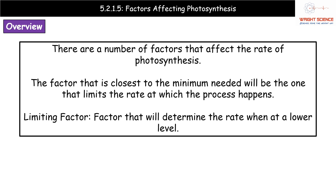First, if we think back to GCSE biology we would have been told about things called limiting factors. A limiting factor quite simply is one that will determine the rate when it occurs at a lower level. We have a number of factors that could be limiting factors of photosynthesis, and we're going to take each one in turn to see what happens.